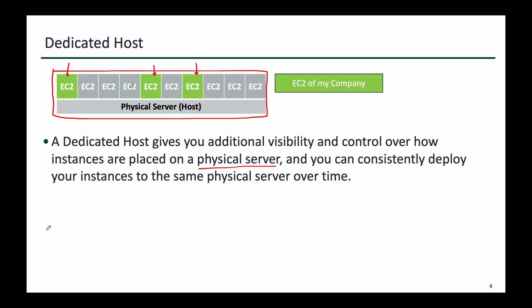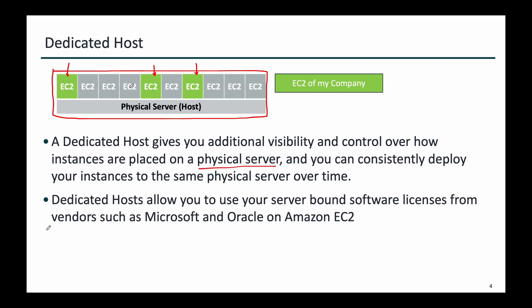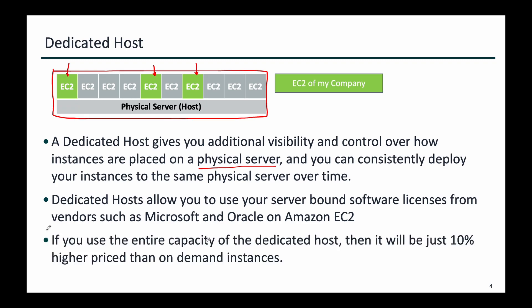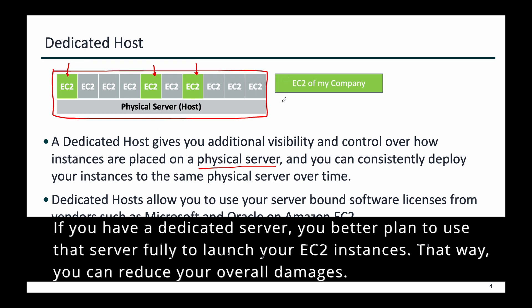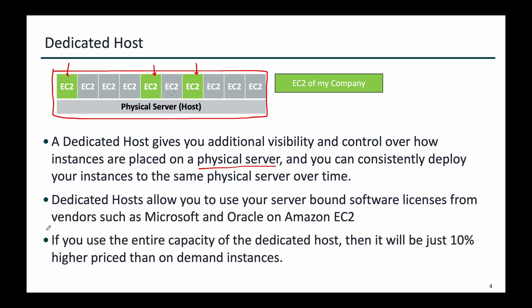Why is that required? It is required because there are server-bound licenses from companies such as Microsoft, Oracle, or RHEL, etc., which are actually bound to a particular socket or core. So you need to know where you are launching your EC2 instance — otherwise you will not be complying with the licensing terms. The physical server is provided for you to comply with the licensing terms of some of these server-bound licenses. If you use the entire capacity of the dedicated host, then it will be just 10% higher priced than on-demand instances. But if you are using only one EC2 instance in the entire host, it may be costly. If all the slots are used effectively, your overall price will be just 10% higher than on-demand, and it will be more cost effective than dedicated instances as well.